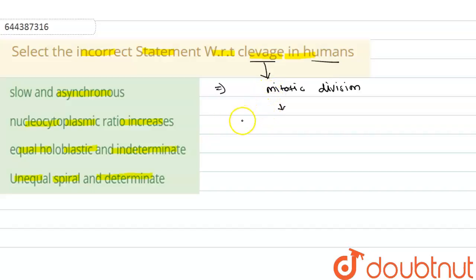First one is the meridional division and the second one is rotational division or equatorial division.